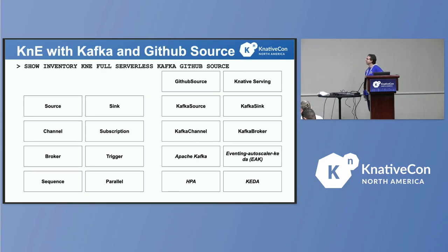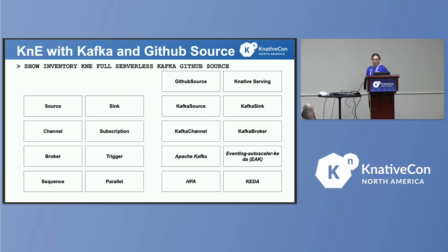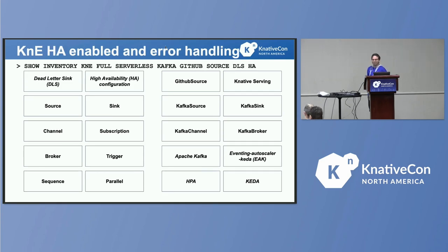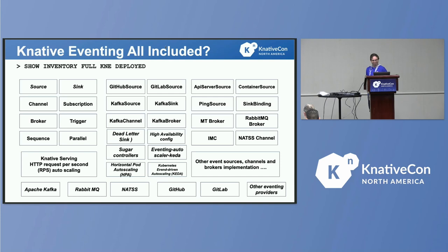You start building on top of it — you would like to have not only a Kafka source but other sources in your system. We will show in this demo two types of event sources you need to know about, with GitHub source as an example. And finally, if you are running the system, as we know, something always goes wrong — so how should you think about configuring for high availability, default retries, and what happens if you cannot send events to your consumers?